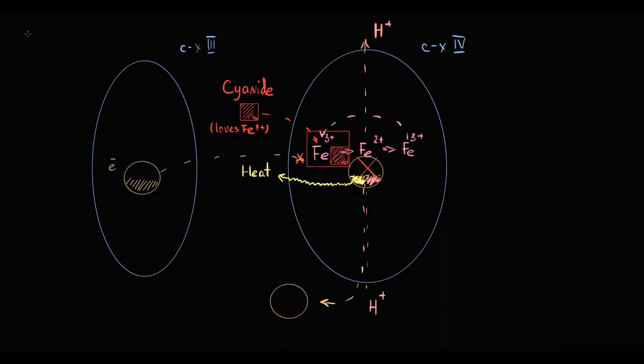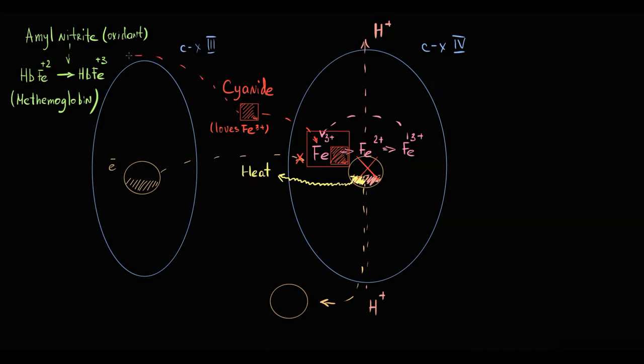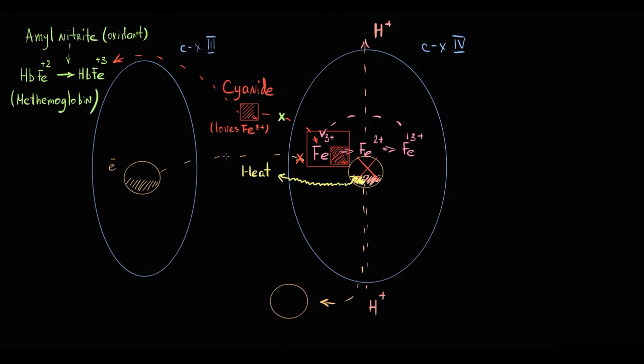The first option is to give amyl nitrite. It's a strong oxidant that oxidizes iron with plus-2 charge in normal hemoglobin to plus-3 charge and now this substance is called methemoglobin. And the concept here is that cyanide does not care what substance has ferric iron, it just loves iron with plus-3 charge. And now cyanide will bind to ferric iron in methemoglobin in the blood, instead of ferric iron in complex IV.